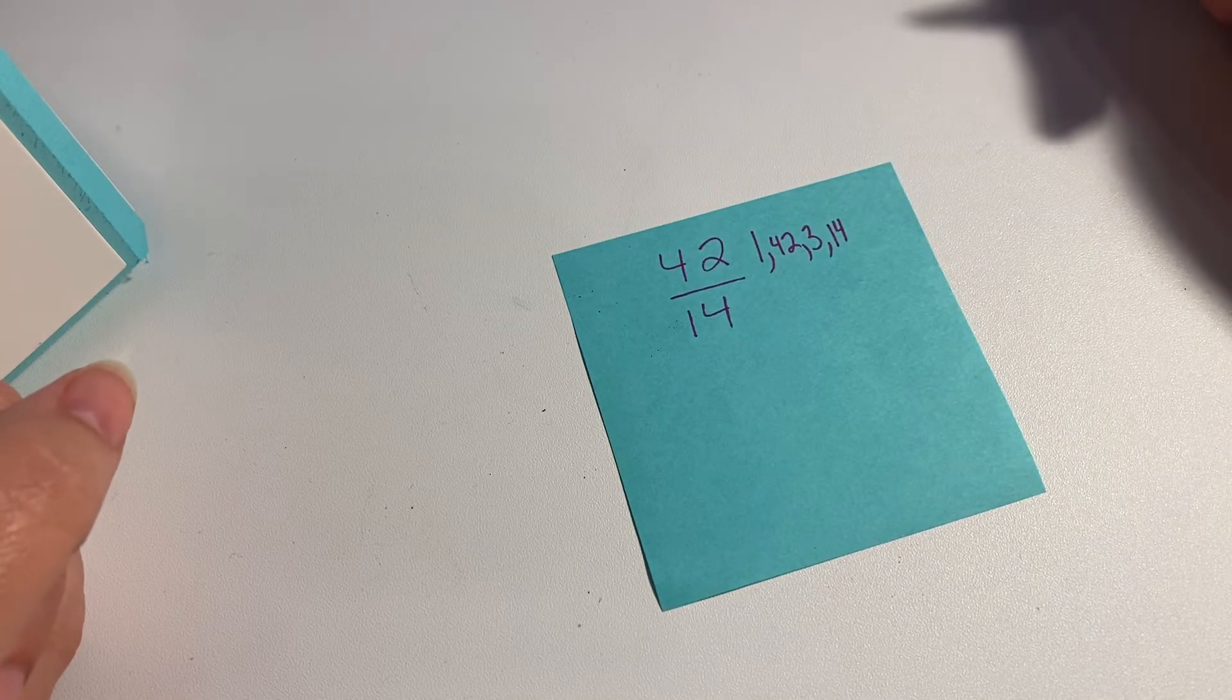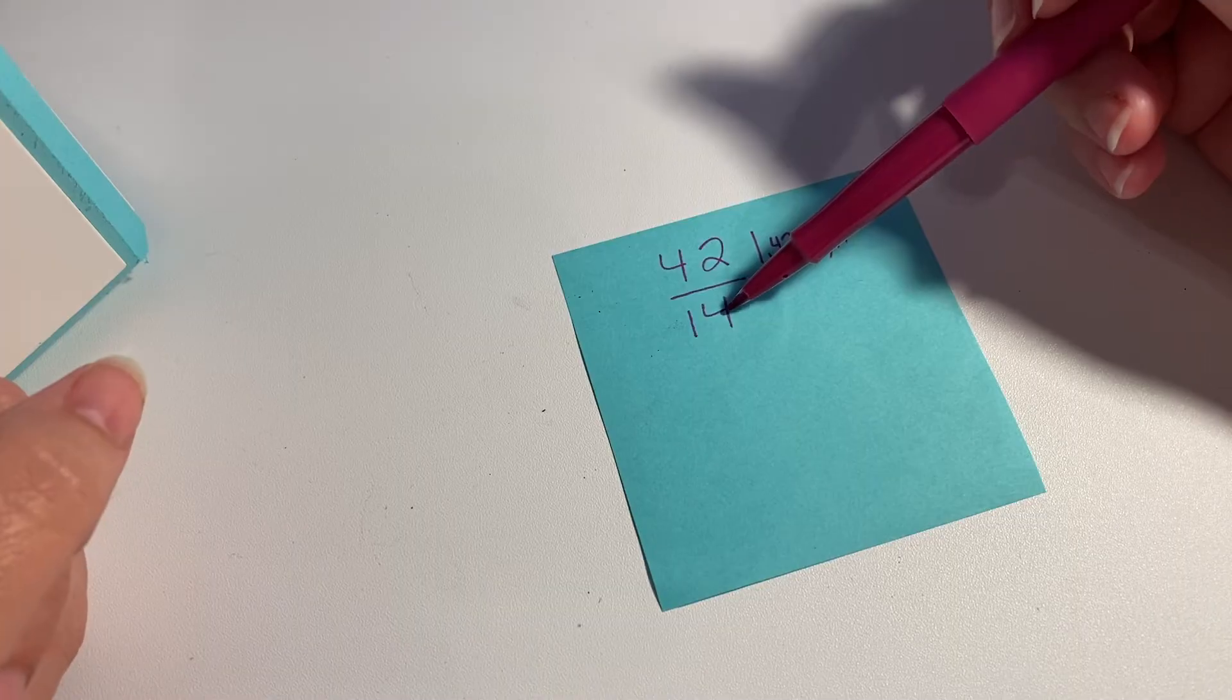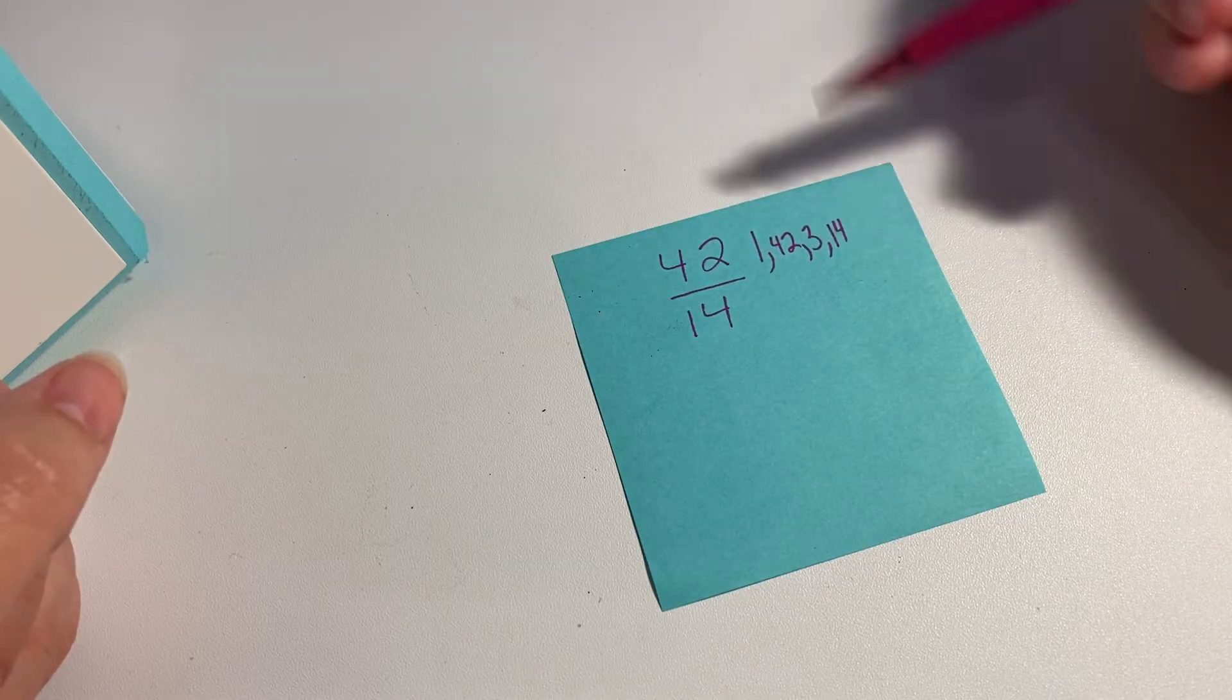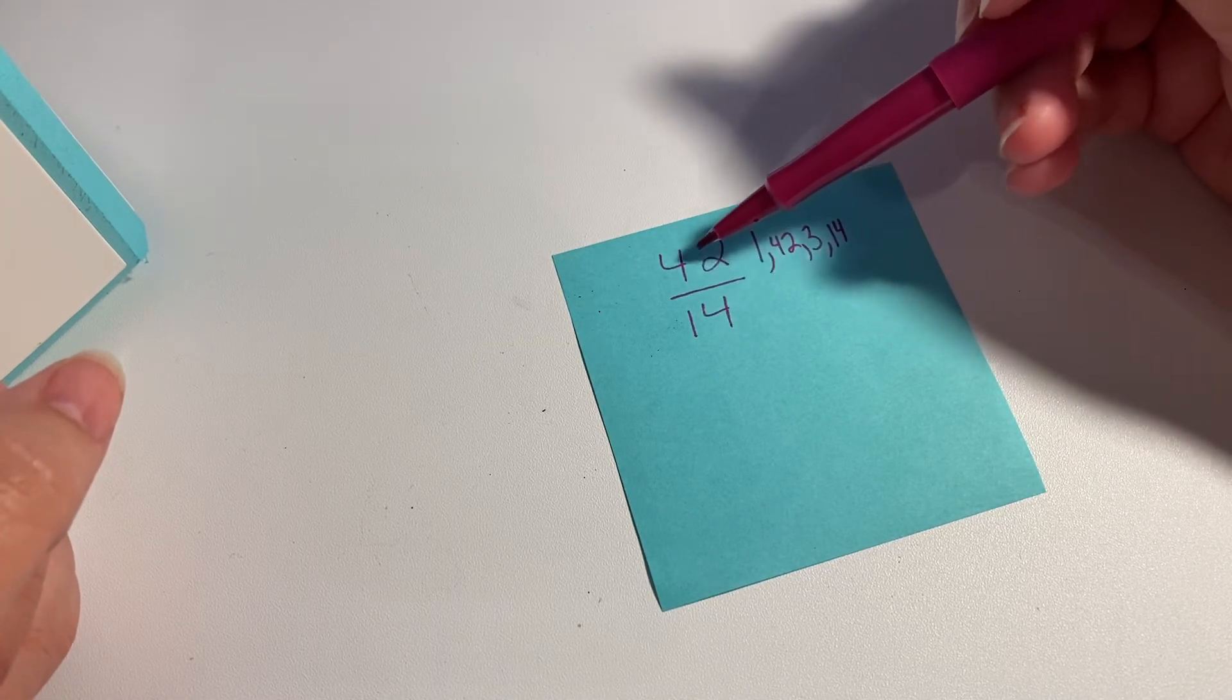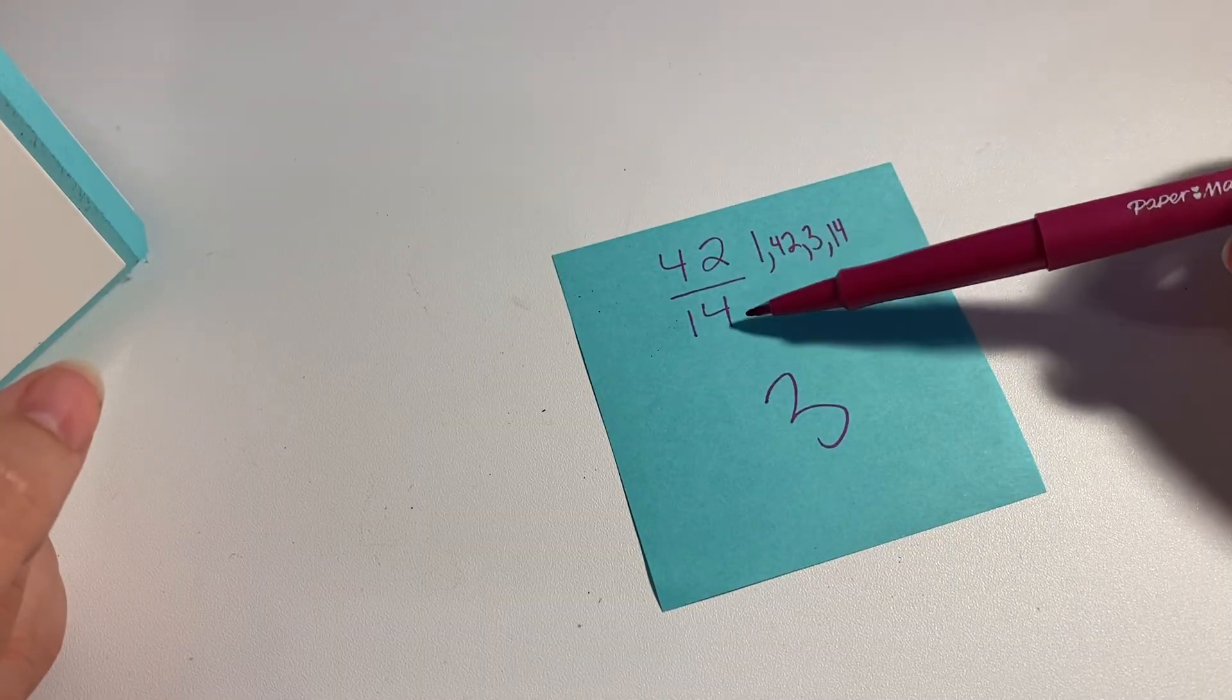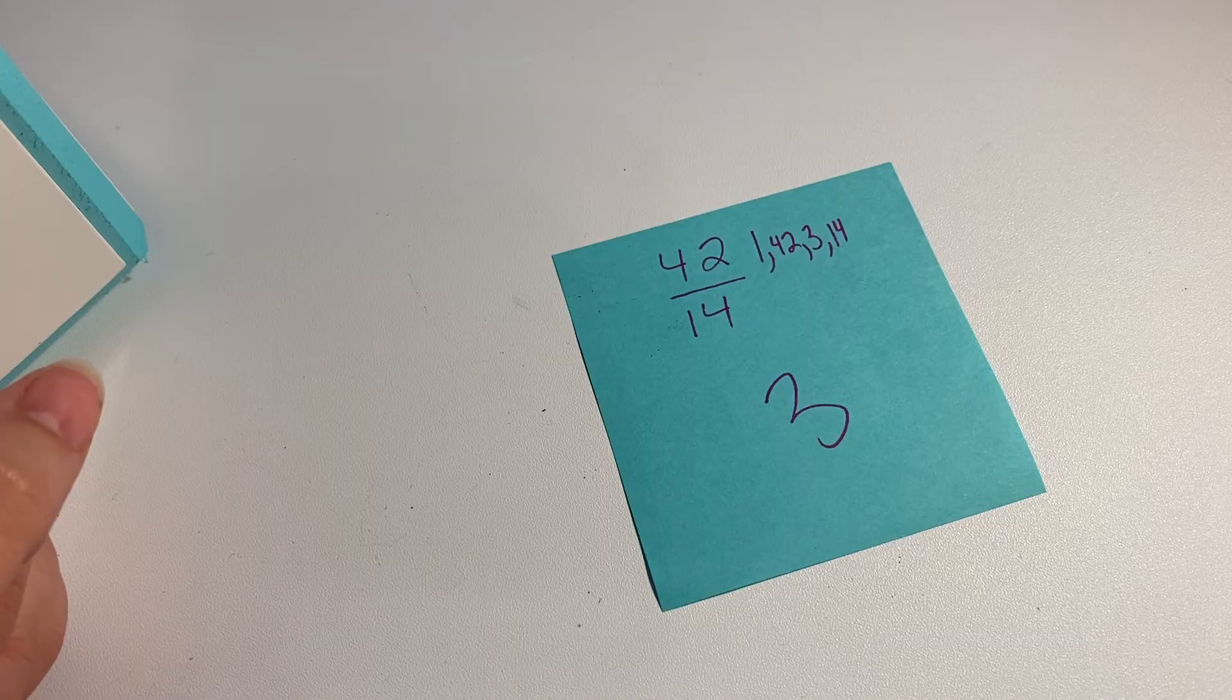Well, we can stop right there. We don't have to keep going, because we know we can't have a bigger factor of 14 than 14. So once I know that three goes into 14 or into 42 14 times, that has to be the greatest common factor. So then we just divide 42 divided by 14, which we just found out was three. And so we know that this improper fraction, when it's simplified, is three.